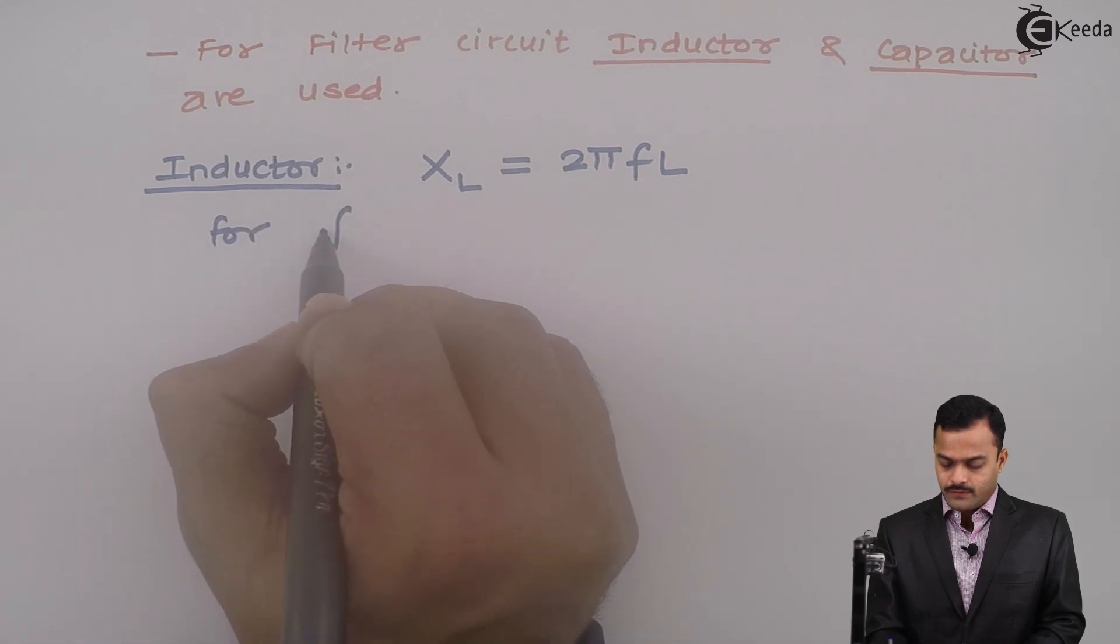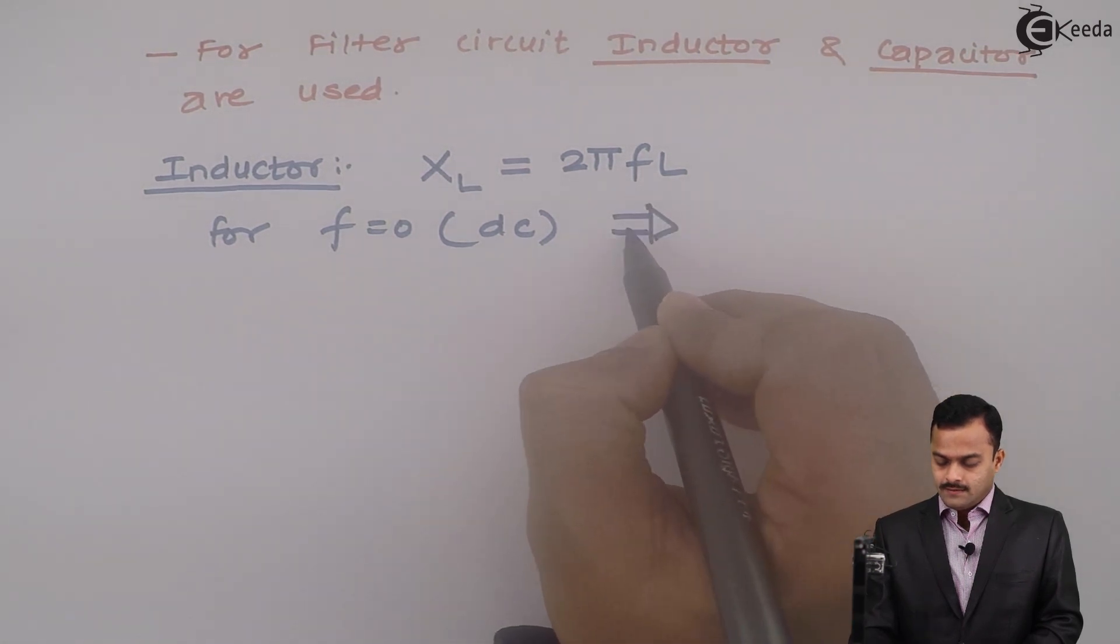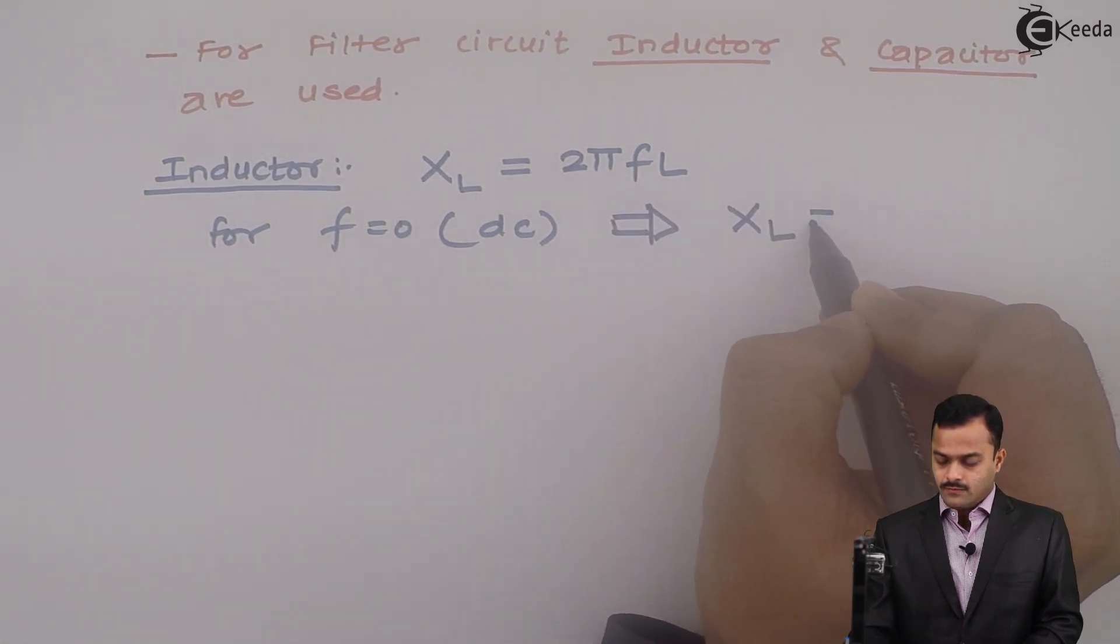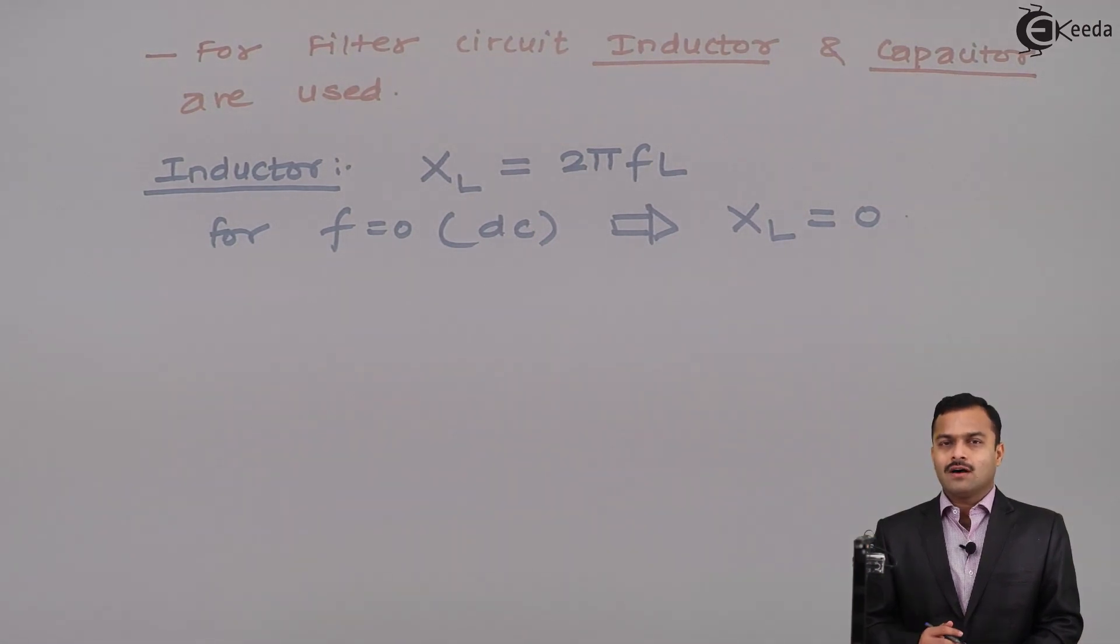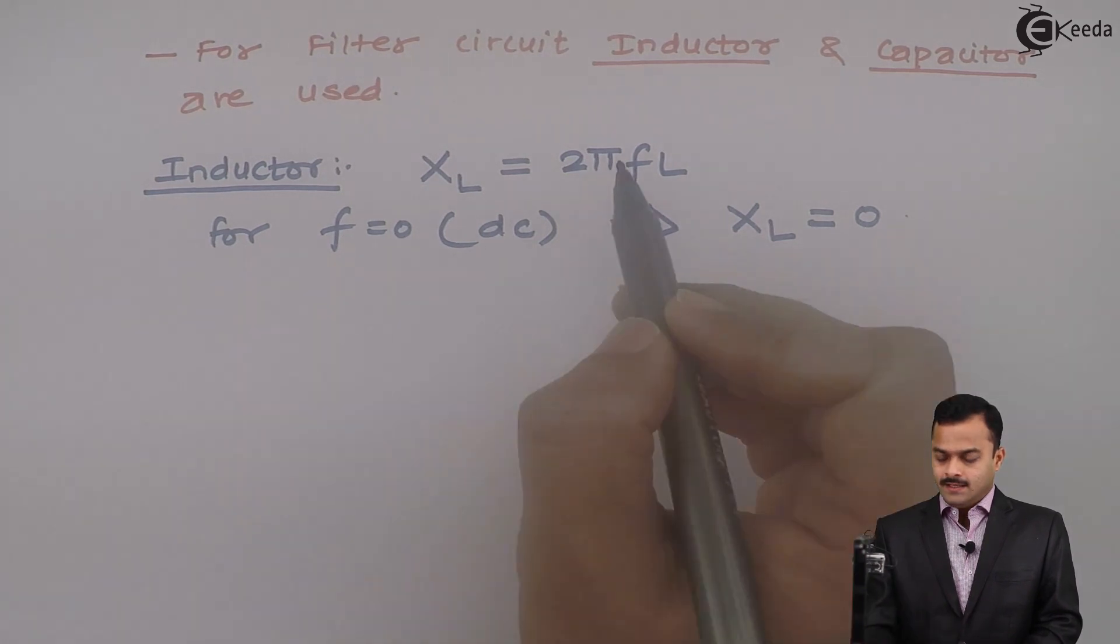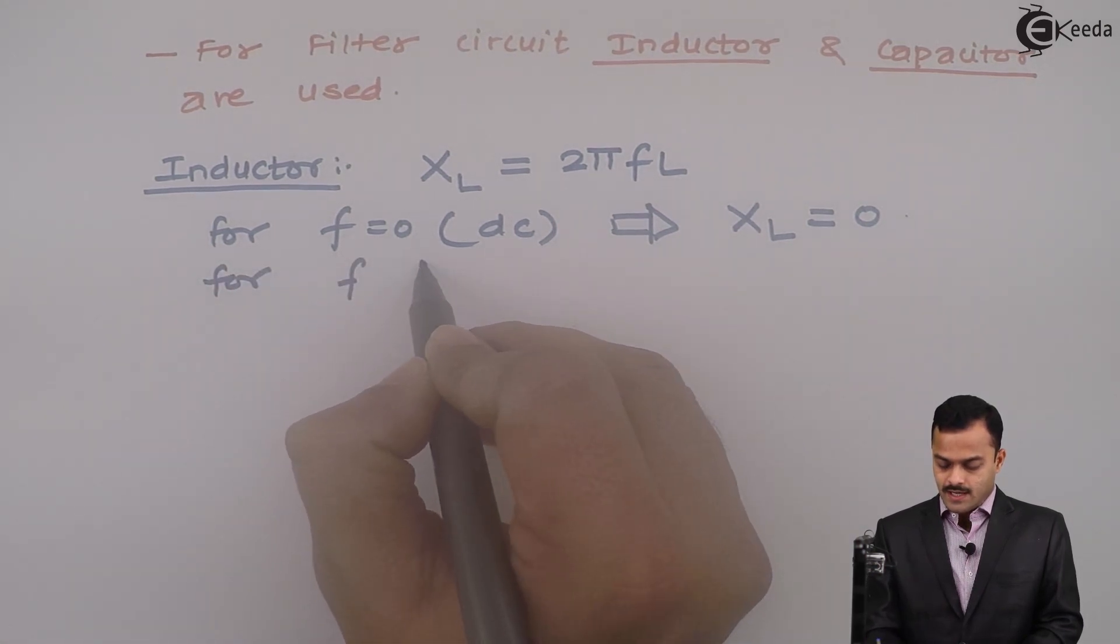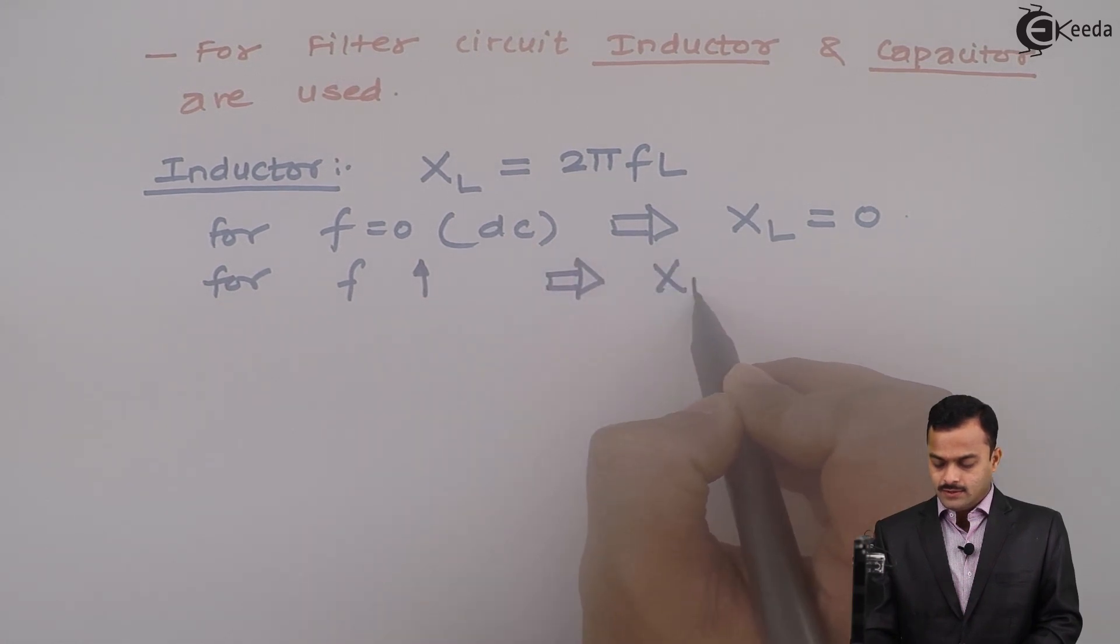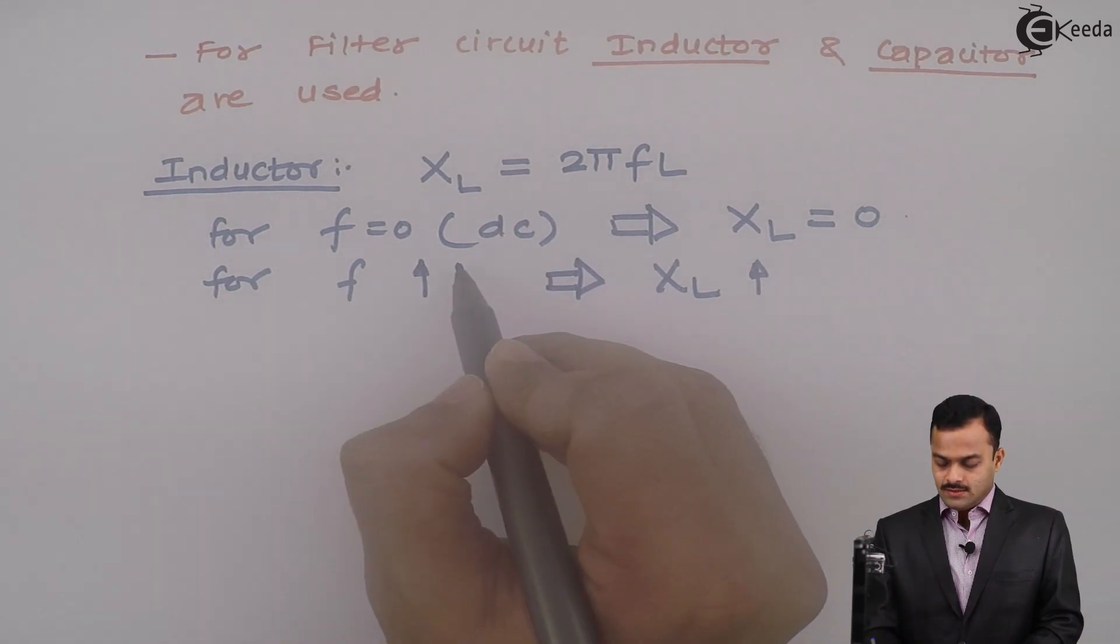For frequency 0 which is nothing but DC, I will get XL equal to 0. That means it has least resistance for the passage of DC current. But, if frequency is high like the case in AC or especially in ripple, it will be very high. For frequency which is very high, you will get XL value also proportionally high. This frequency high is nothing but AC component especially ripple.